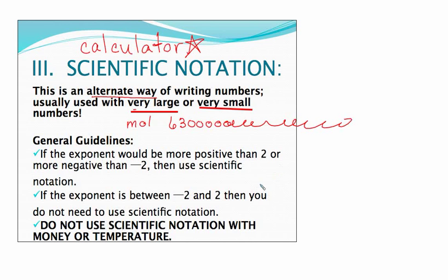Okay, I don't want to sit there and write 22 zeros. That's silly. We need a better way to write numbers like that. And as a general guideline, I don't take off points for this, but if the exponent, that number that's the power of 10, would be more positive than a plus 2 or more negative than a negative 2, then we're going to use scientific notation.